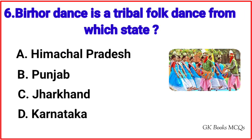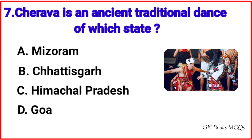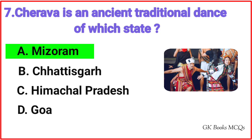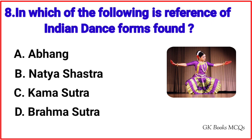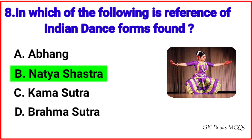Question number 6: Birho dance is a tribal folk dance from which state? Correct answer is option C, Jharkhand. Question number 7: Chayrava is an ancient traditional dance of which state? Correct answer is option A, Mizoram. Question number 8: In which of the following is a reference of Indian dance forms found? Correct answer is option B, Nartya Shastra.